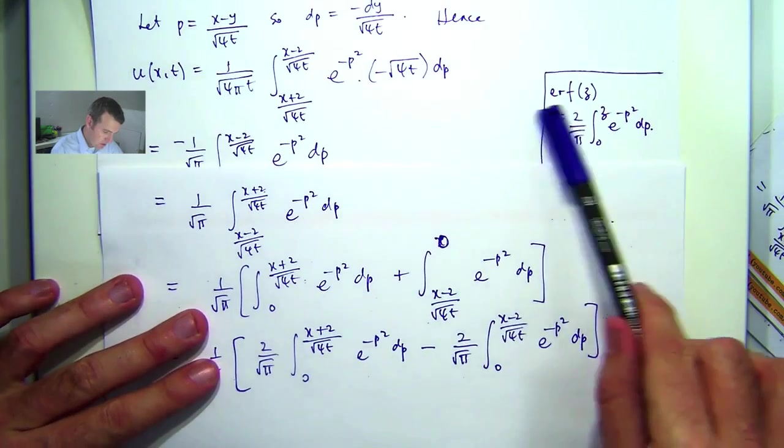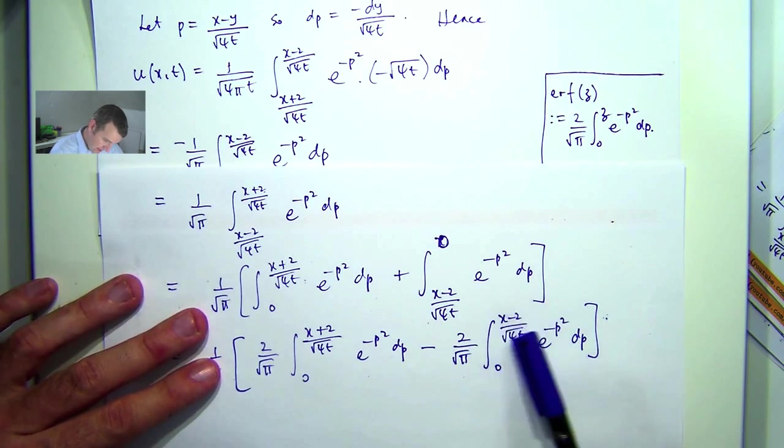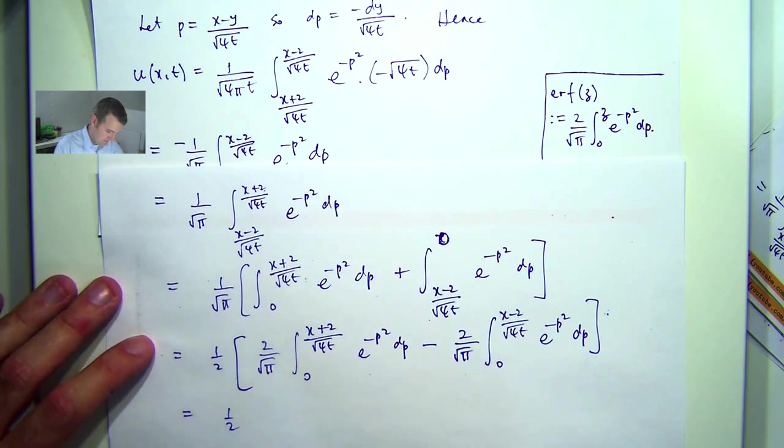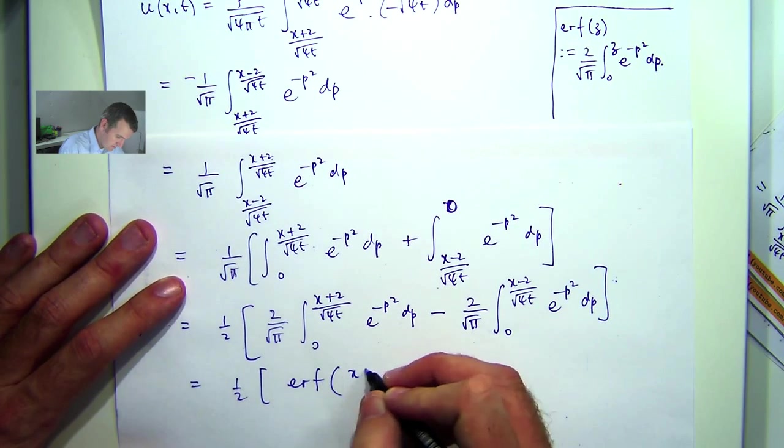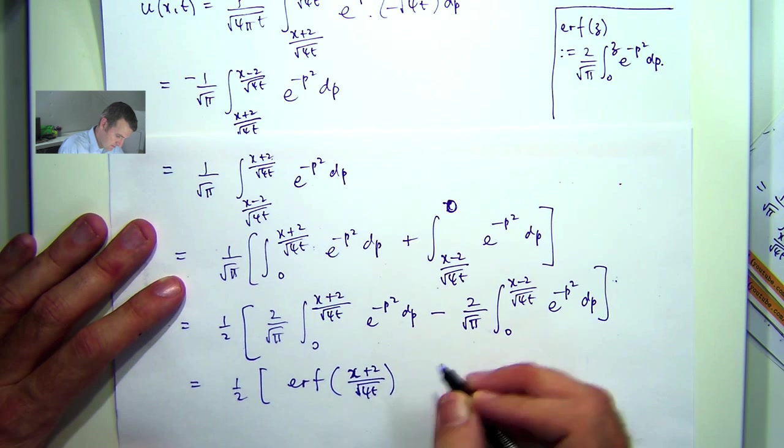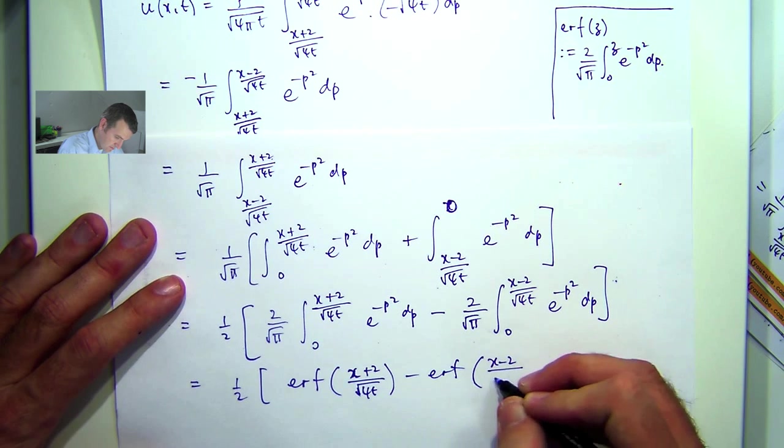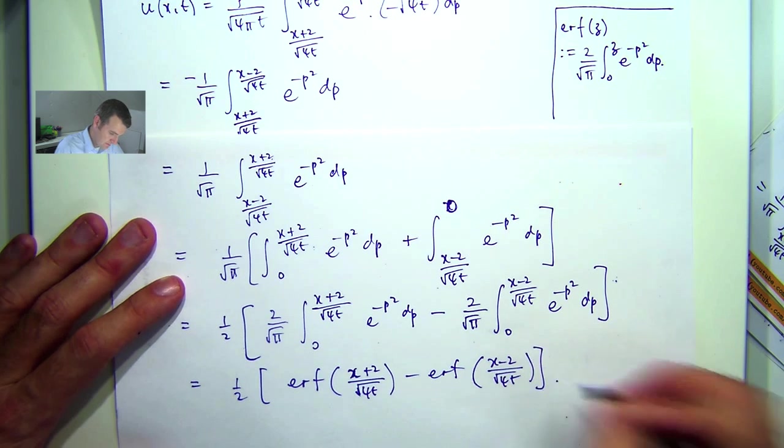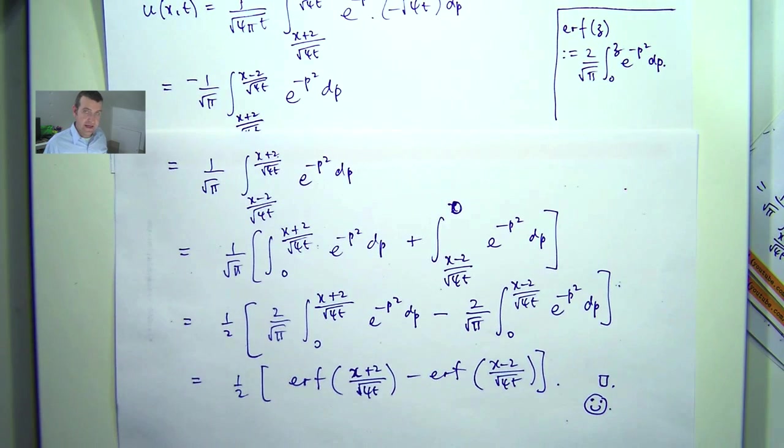This will be erf of that. And this will be erf of that. And we're finished. So you might think, well, we haven't really evaluated the solution or found it out. Well, we've written it in terms of a special function.